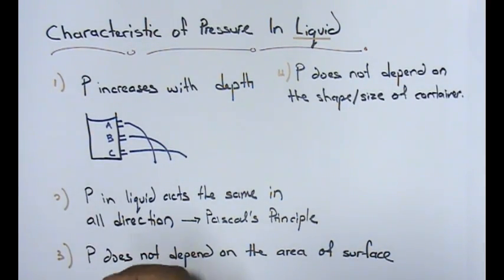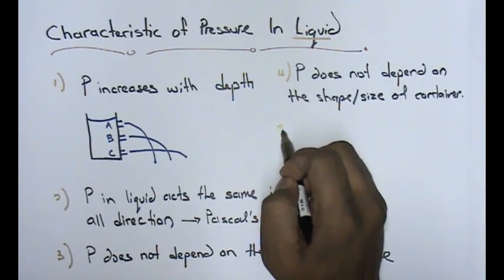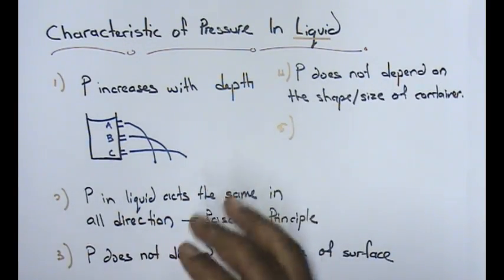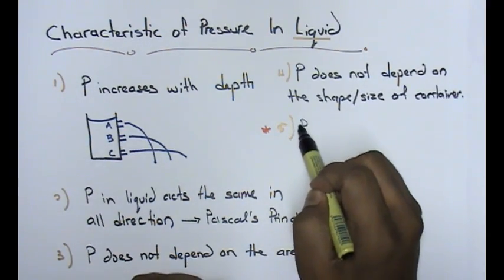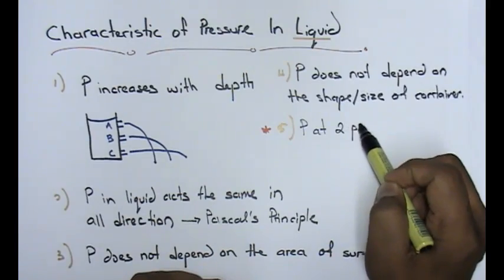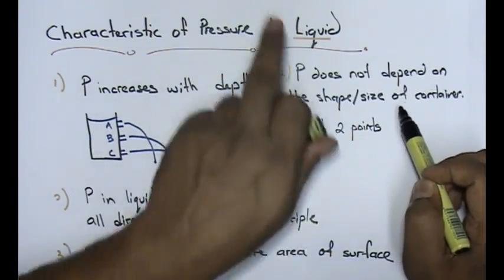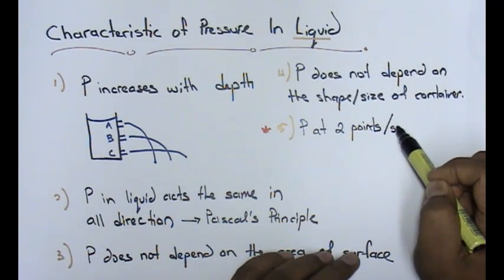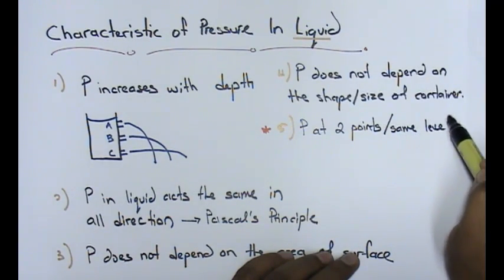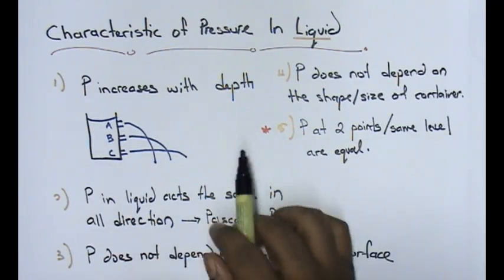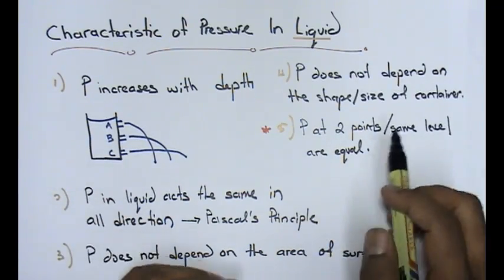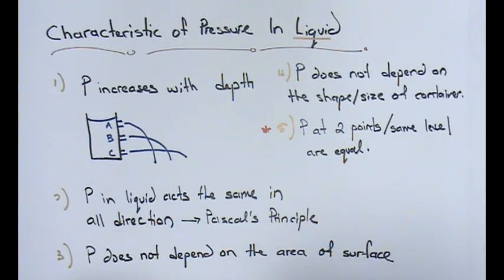Golden rule number five, which is actually the most important rule. I don't want you to forget this. Pressure at two points at same level are equal. This is very important, especially when I'm explaining how to use the U-tube manometer. For the manometer example, this is very, very important.